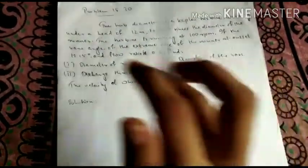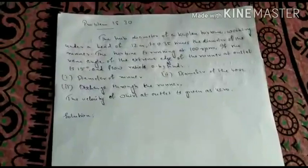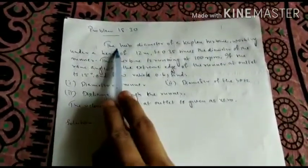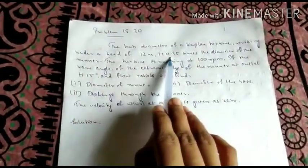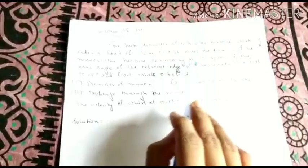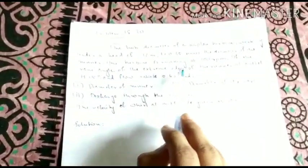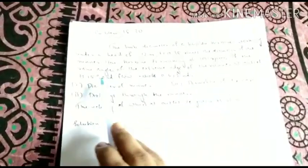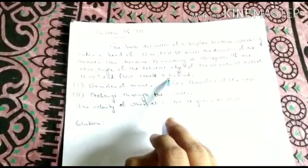The problem that we are going to discuss today is problem 18.3 from the textbook. The hub diameter of a Kaplan turbine working under a head of 12 meter is 0.35 times the diameter of the runner. The turbine is running at 100 rpm. If the vane angle of the extreme edge of the runner at outlet is 15 degrees and flow ratio is 0.6.